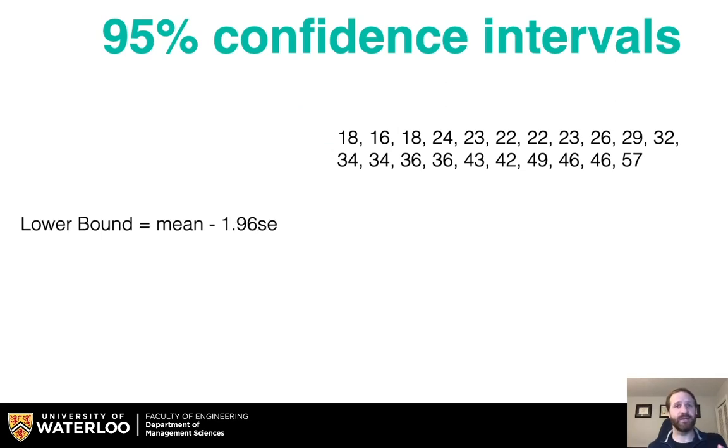The lower bound is the mean minus 1.96 standard error, and the upper bound is mean plus 1.96 standard error. That 1.96 again comes from the normal distribution, and it corresponds to the value where you'd have 95% of the values fall within this range.